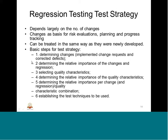Regression testing test strategy: depending on the number and kind of changes, we evaluate the risks and plan how to track progress of the embedded system's regression testing. The test strategy steps are: identify or determine the changes, determine their relative importance, select quality characteristics, determine the relative importance of the quality types, determine the relative importance for each change-quality combination, and establish the test techniques to be used for regression testing.